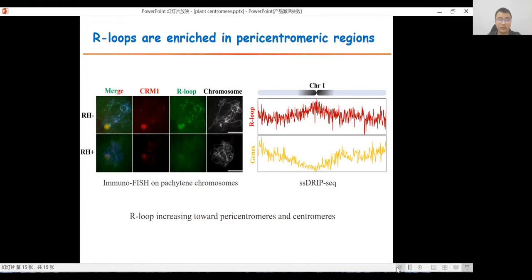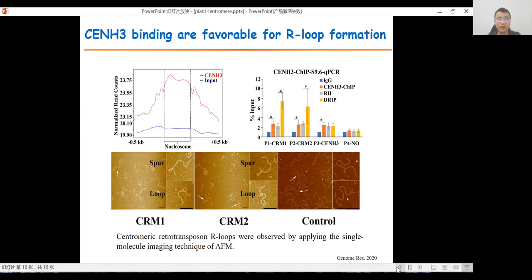We further performed single-strand DRIP-seq with the S9.6 antibody to investigate R-loop distribution on maize. We found generally the chromosome-level R-loop increases towards the pericentromeres and centromeres. Immunostaining and FISH with the anti-S9.6 antibody and the CRM1 probe on pachytene chromosomes also confirmed this result. We conclude that R-loops are enriched in the pericentromeric region in maize.